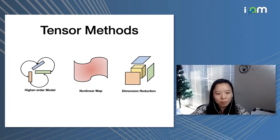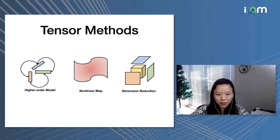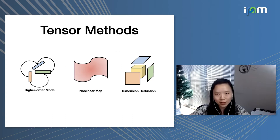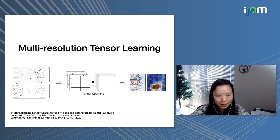Nowadays in machine learning, most people use deep learning to generate predictions, because they are powerful in representing unknown functions. However, deep learning models are very difficult to interpret. For domain scientists, the predictions from deep learning are very difficult to make sense of. Tensor methods have the advantage of being shallow models — even though they may not have the same prediction accuracy as deep learning models, they enable interpretable models that can be useful to domain science. In today's talk, I will focus on our recent ICML 2020 paper on multi-resolution tensor learning.